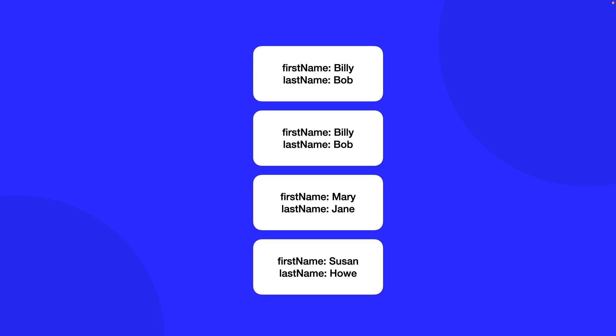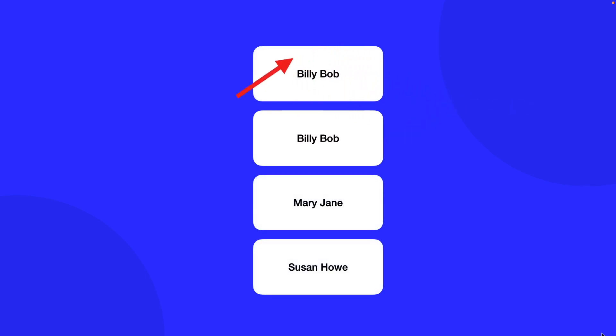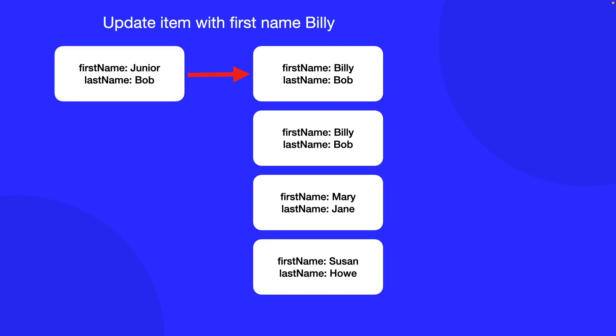Let's look at an example where we have a list of people, like a contacts book. When working with lists you want to be able to uniquely identify each element. In this example we're uniquely identifying each person by name. But we have a problem — the first two entries actually have the same name. What if we want to update the first person and change their name from Billy to Junior? How could we do this?